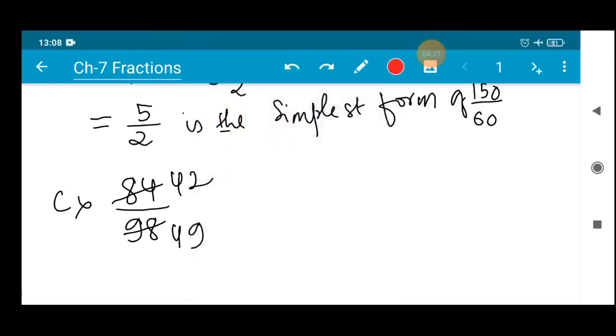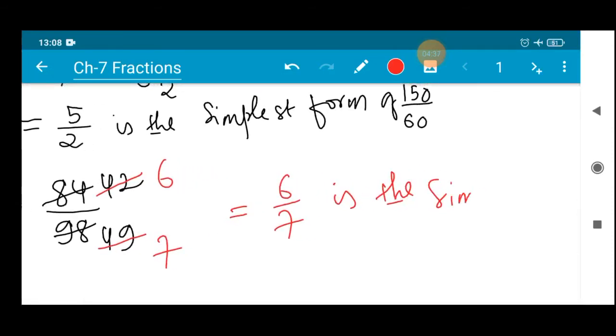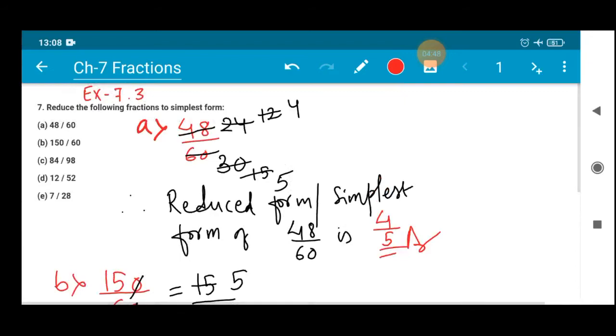Let's start again dividing with 2. But you can see here 49 cannot be divided by 2 because 9 is at the end of the digit. Unit digit is odd number. So let's divide with 7. 7 sixes are 42, 7 sevens are 49. So the reduced form is 6 by 7. 6 by 7 is the simplest form of 84 by 98.